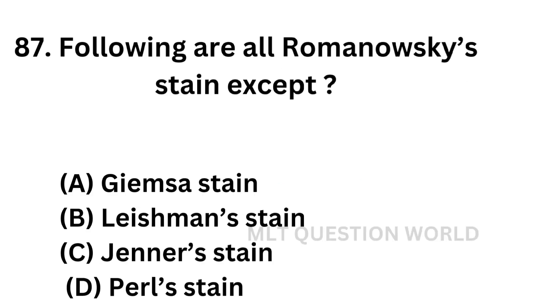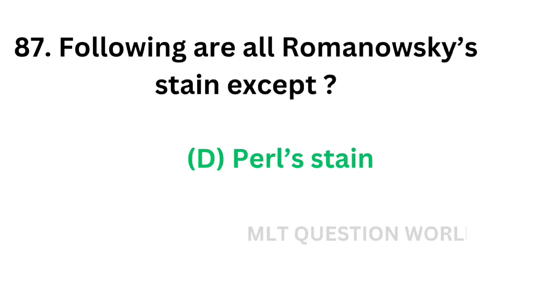Question number 87: Following are the Romanowski stains except. Option A: Giemsa stain. Option B: Leishman stain. Option C: Jenner stain. Option D: Pearl stain. Giemsa stain, Leishman stain, and Jenner stain are Romanowski stains. But Pearl stain is not a Romanowski stain. So the correct answer is Option D, Pearl stain.